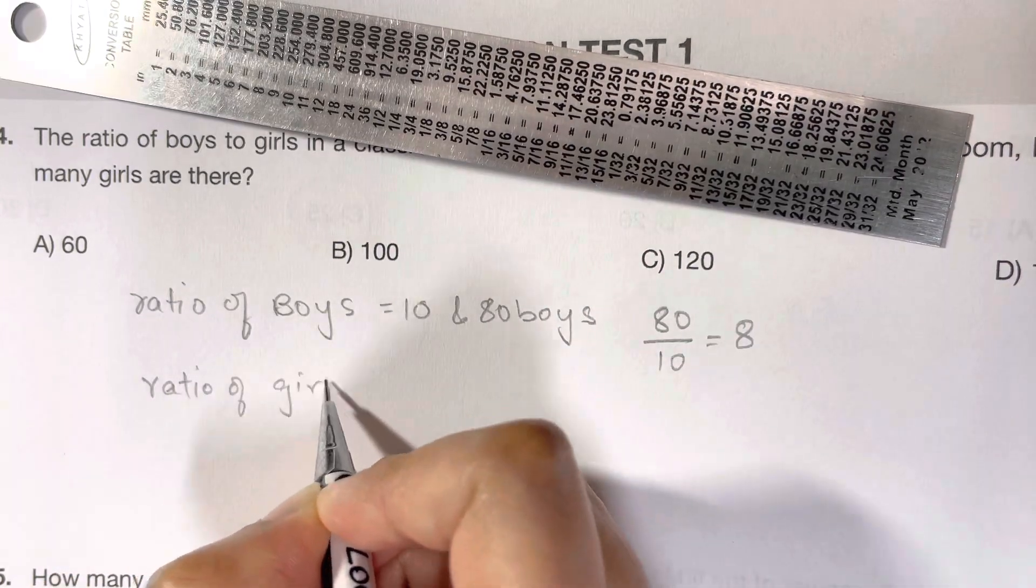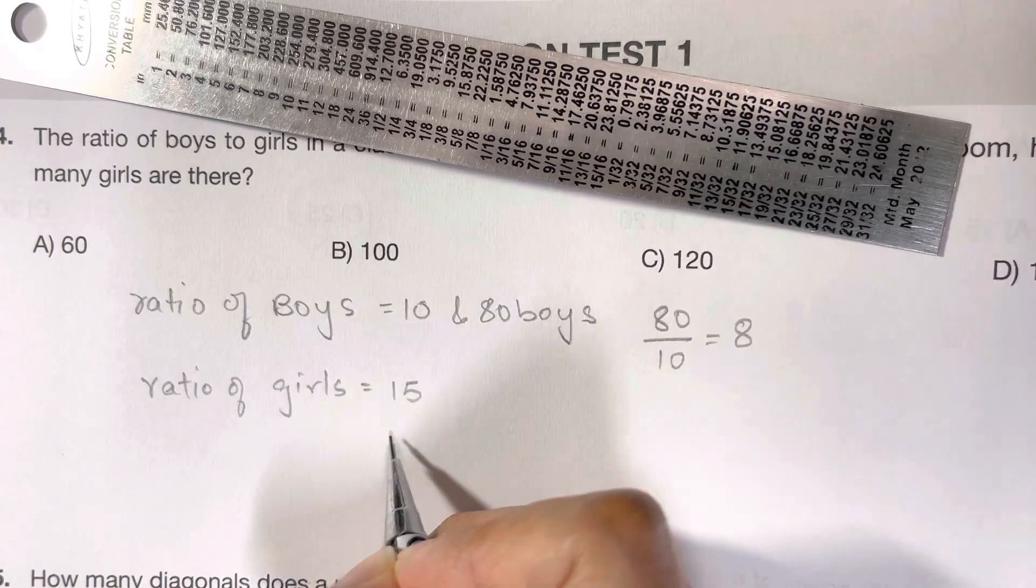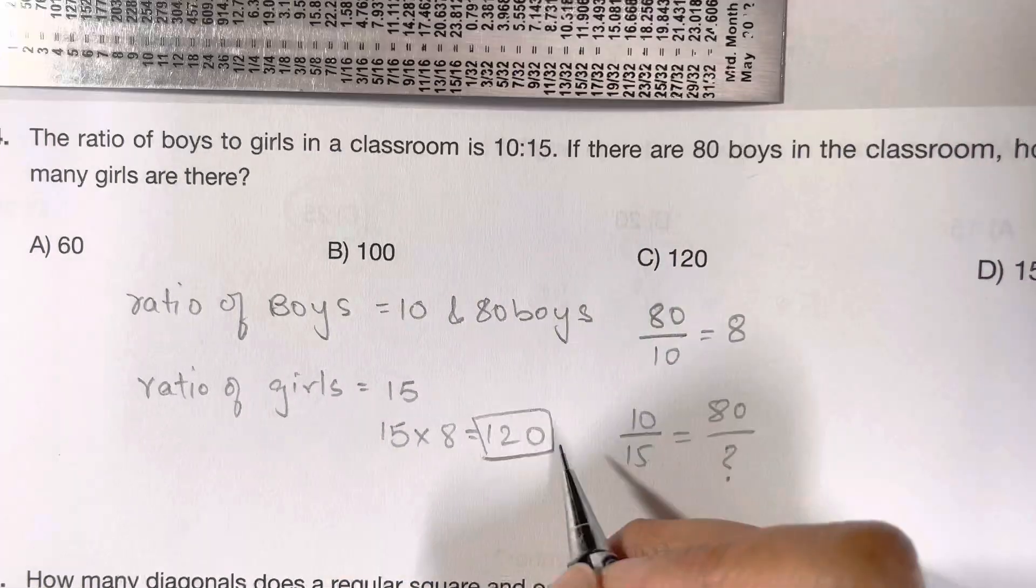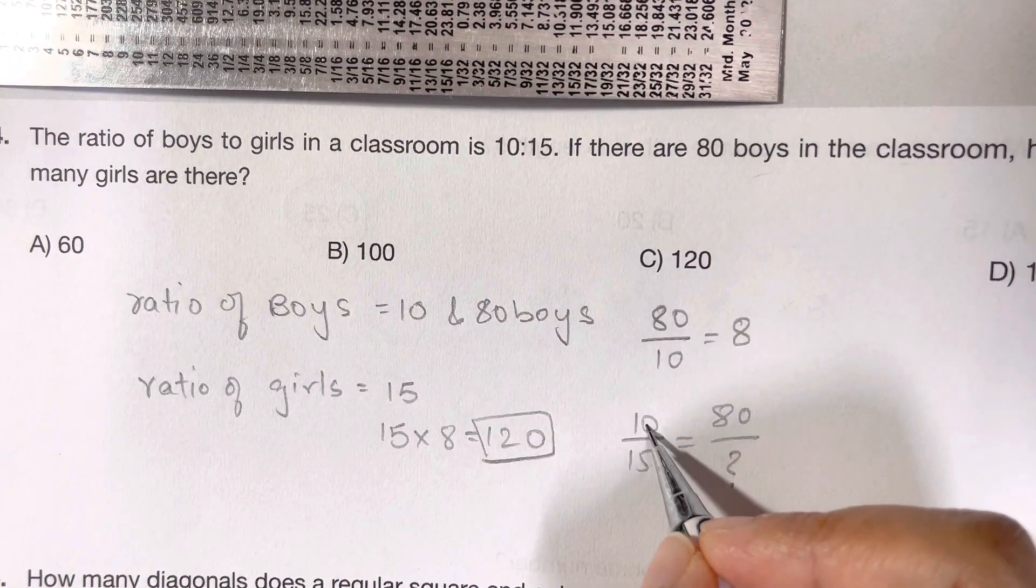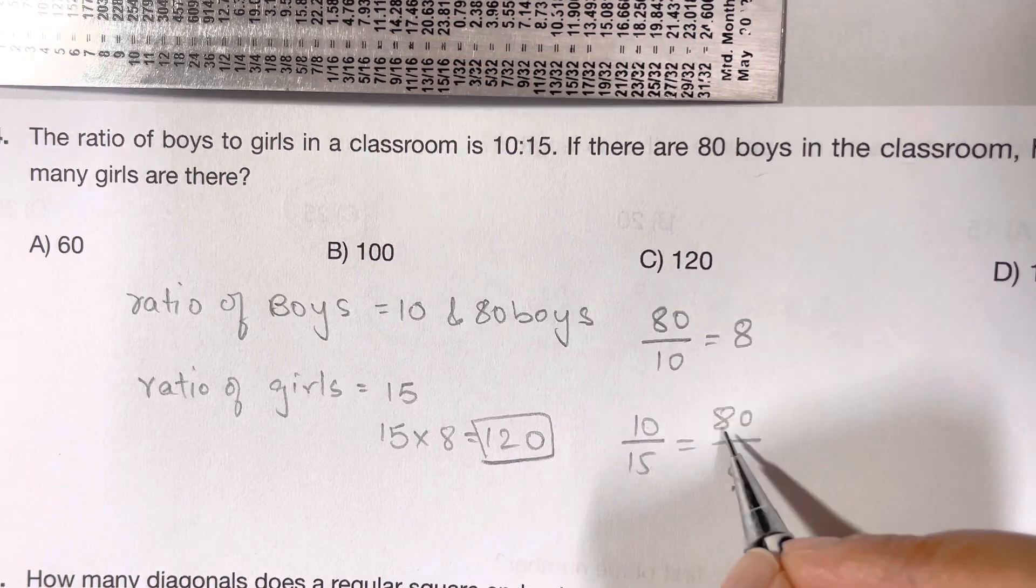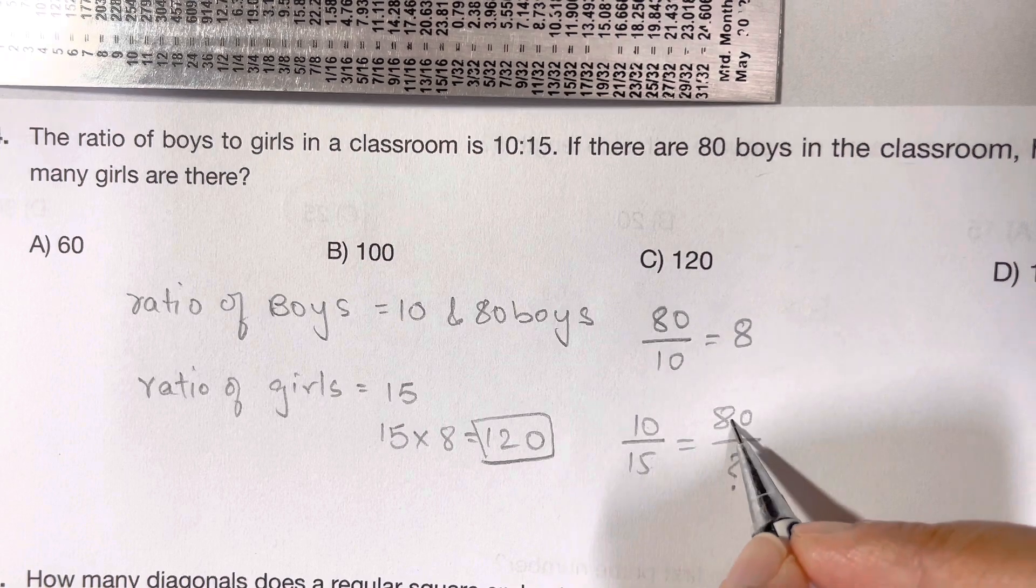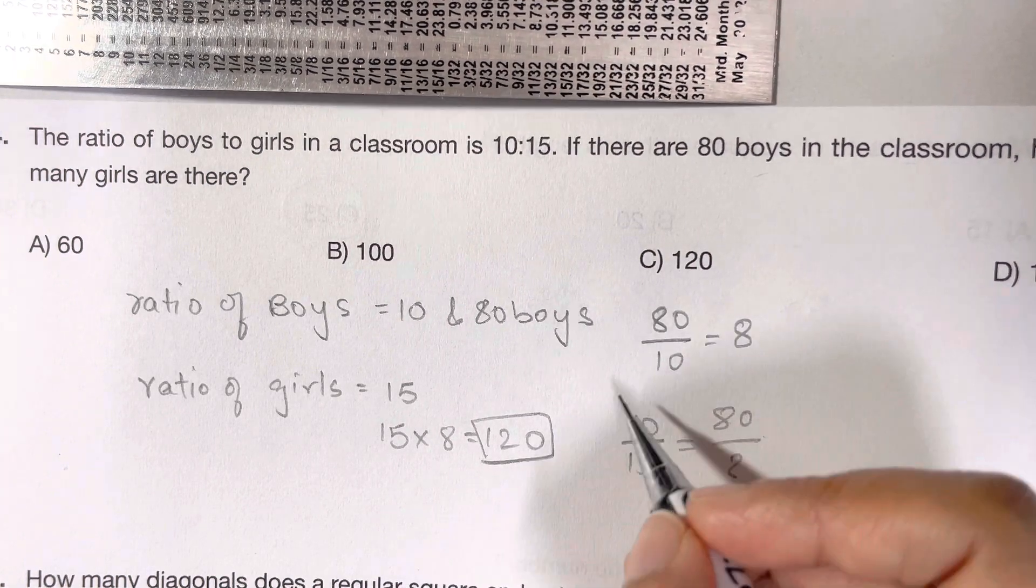8 multiplied by ratio of girls, which is 15. So 15 multiplied by 8 will give you 120. You can even do it this way: form a ratio 10 over 15, ratio of boys to ratio of girls equals number of boys to number of girls. Cross multiply: 80 over 10 multiplied by 15, that's 120. So that's your answer, choice C.